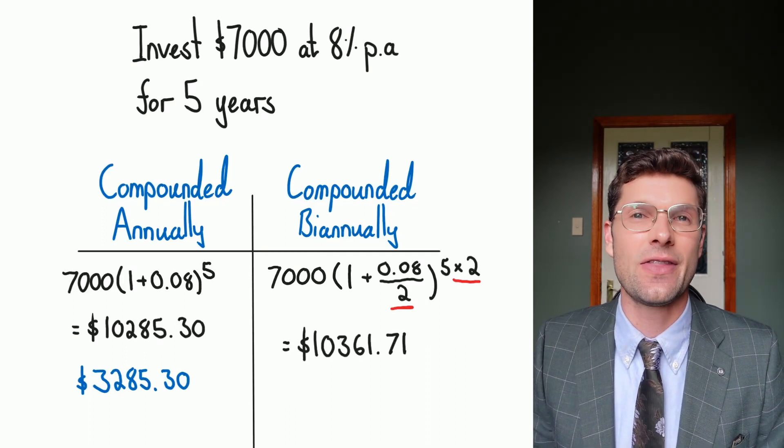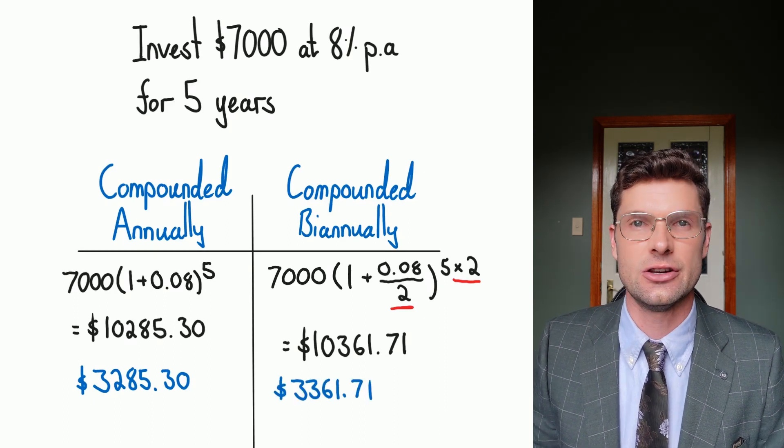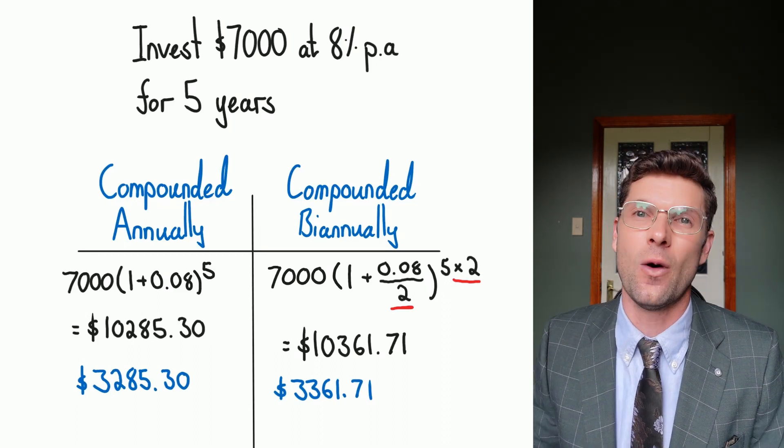So if you type this into your calculator, you get $10,361, which is $3,360 worth of interest. So you can see incredibly quickly that obviously the biannual one is a lot more.